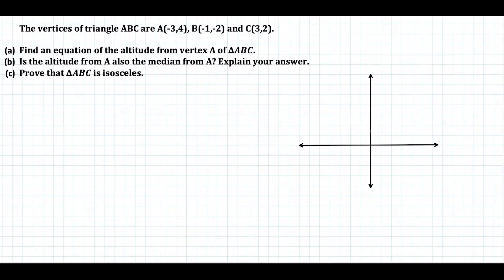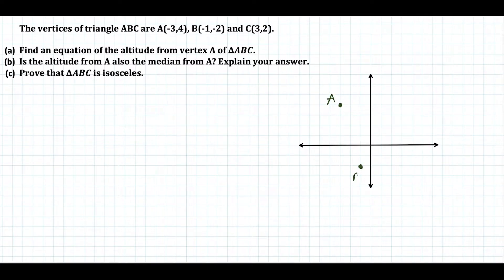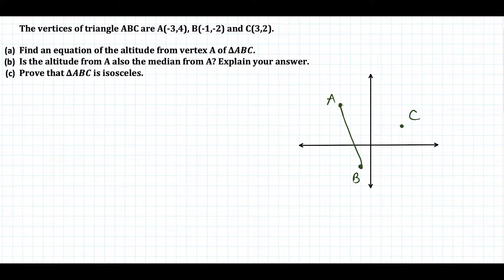We have triangle ABC where A is at negative 3, 4. We'll go ahead and plot these points. So A is over here, B is at negative 1, negative 2, and C is at 3, 2. Now we'll just connect these with three straight lines.